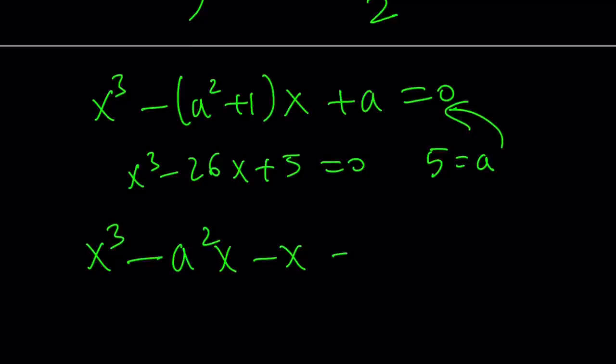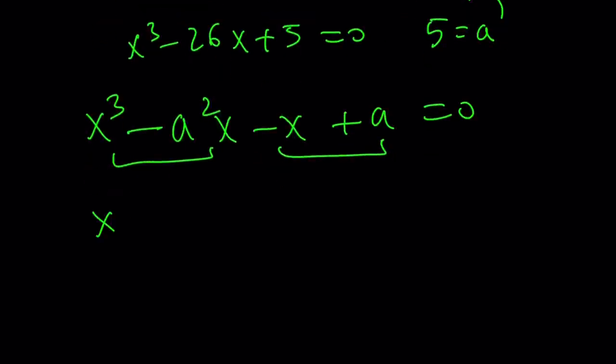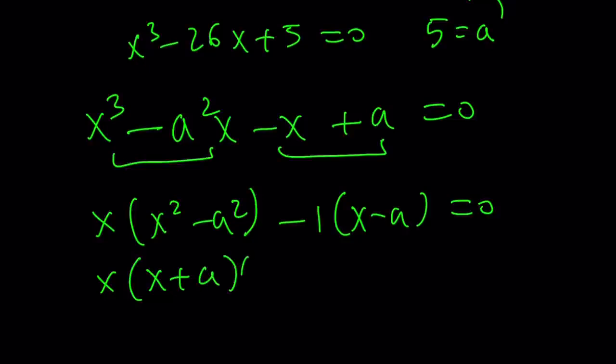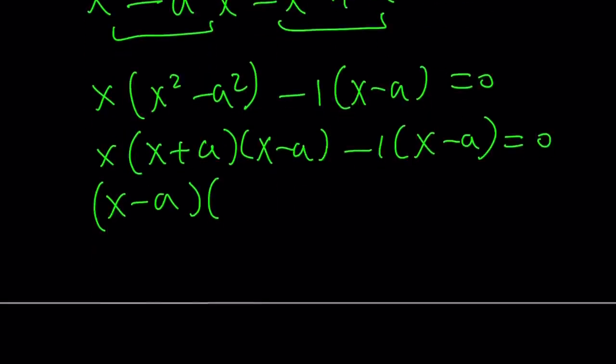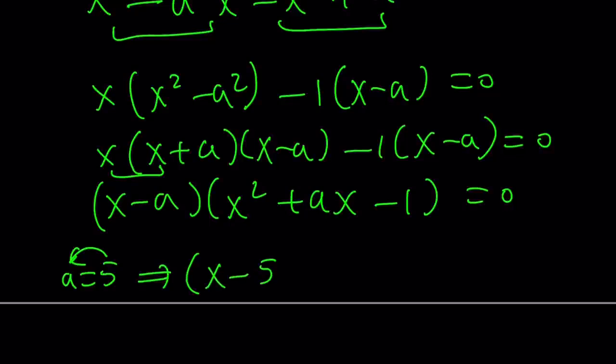We're going to get the following from here. Then we can factor this by grouping. Take out an x, you get x squared minus a squared minus 1. You're going to get x minus A. x squared minus a squared can be factored using difference of two squares. You're going to get a common factor, which is x minus A, which shouldn't be a surprise because we got the same result with the first method. You can write this as x times x plus A, which is x squared plus Ax minus 1 equals 0. If you plug back in A equals 5, you're going to get the exact same equation that we got before. And the solutions are going to be the same.